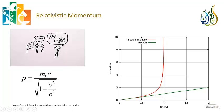As we approach the speed of light, momentum actually becomes infinite. That means it would take an infinite amount of energy to move something at the speed of light. Another way to think about it: this factor modifies the mass so that things actually get heavier as they move more quickly. As bizarre as that sounds, this has been verified over and over again with subatomic particles. We just don't see it in everyday life because the ratio of v to c is so small.